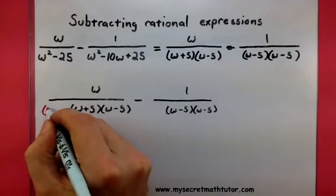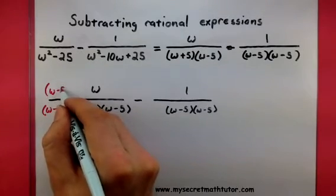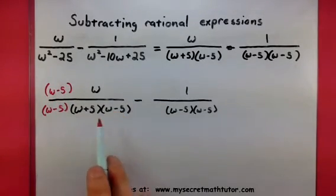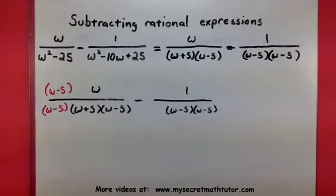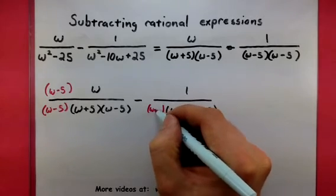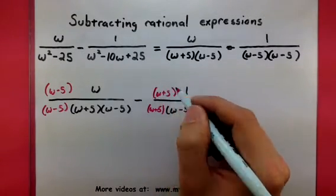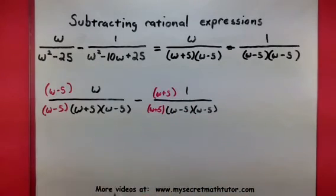So here I'm going to multiply by a w minus 5. I'm doing this so it has two w minus 5s, just like the guy on the right. And over here, I will multiply on the bottom and the top by a w plus 5. That way, it can match the w plus 5 on the left.